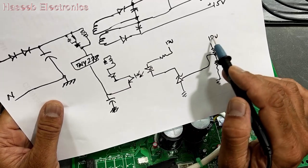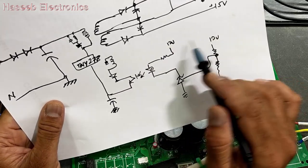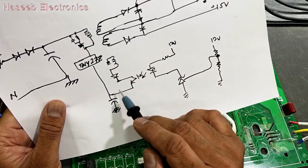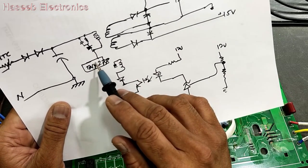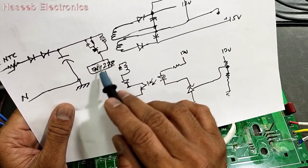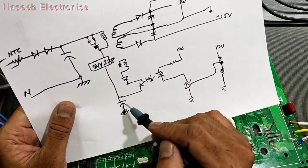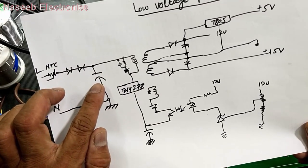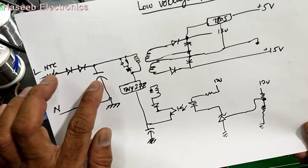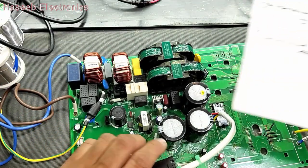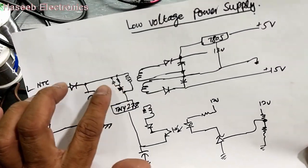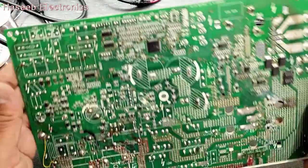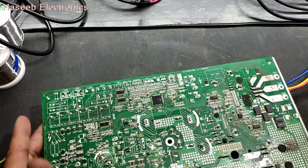Here we have a voltage divider network, TL431, and an optocoupler. When the voltage is maintained at the reference pin, it will drive the output transistor and the voltage will reach the control pin of the TNY278. Here we have the VCC capacitor — this is a 100 microfarad 450 volt DC capacitor. This circuit is a rubber circuit; let's check it.